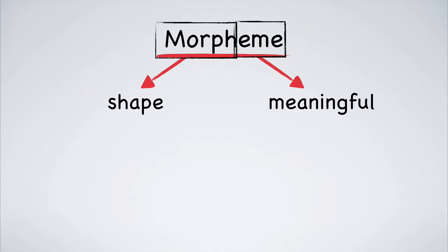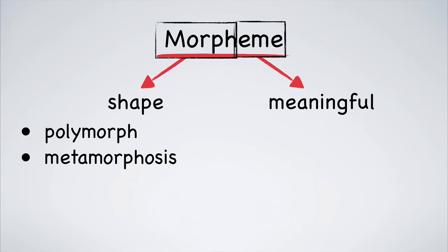For example, morph is used in the words polymorph, an organism that can take many forms; metamorphosis, the process of changing form or shape; morphology, the study of morphemes; morph, a verb that means to change shape; morphogenesis, the origin and development of biological forms. The list goes on.